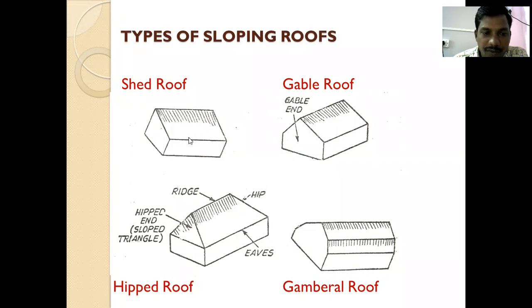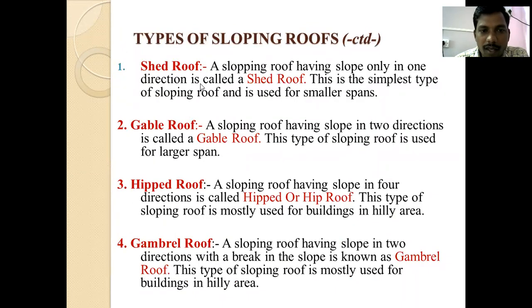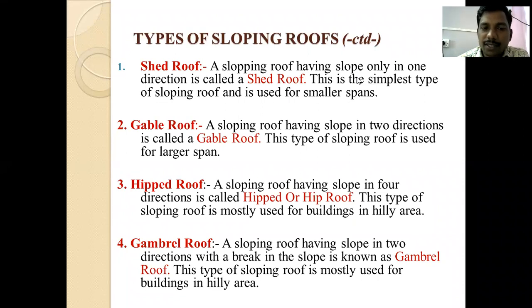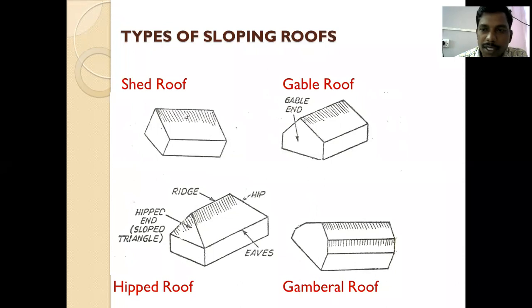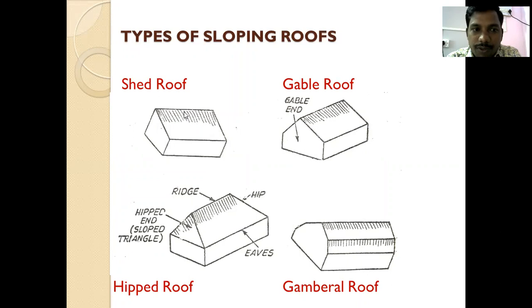First, we will discuss the shed roof. A sloping roof having slope only in one direction is called a shed roof. This is the simplest type of sloping roof and is used for smaller spans. If we provide slope to the roof in only one direction, such a roof is called a shed roof.